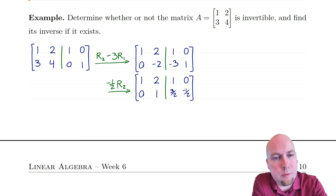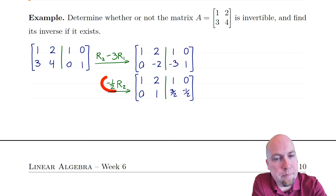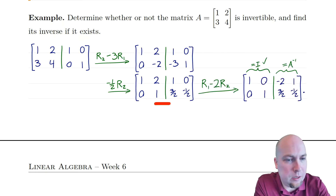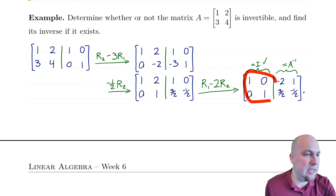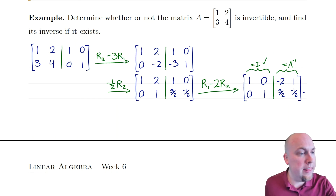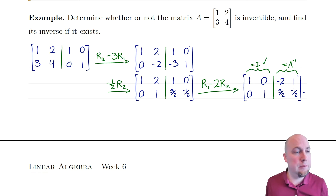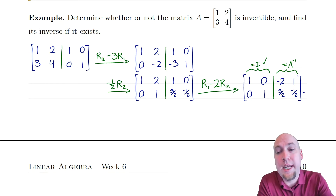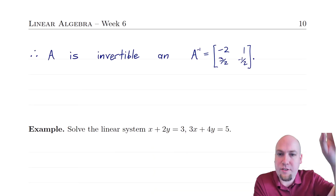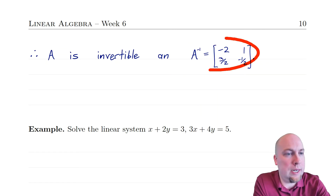I want to turn the three into a zero, so that's why I do this row operation. Next, I want to turn this minus two into a one, so I multiply that whole row through by minus a half. Last, I want to turn this two into a zero, so I do an addition row operation — adding some multiple of the bottom row to the top row. Now I've got the identity matrix on the left, which means matrix A is invertible, and whatever's on the right must be the inverse of A.